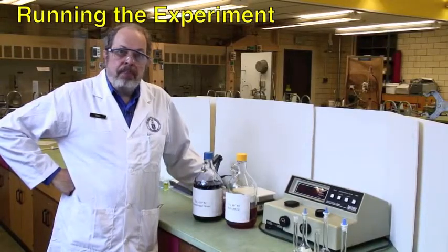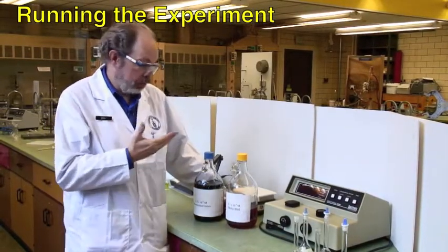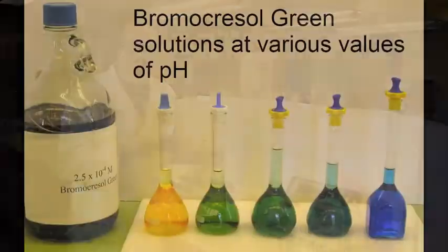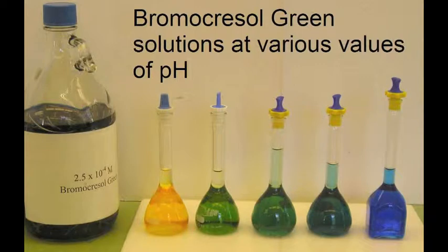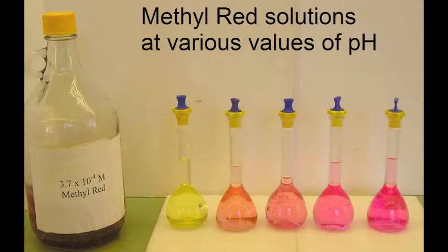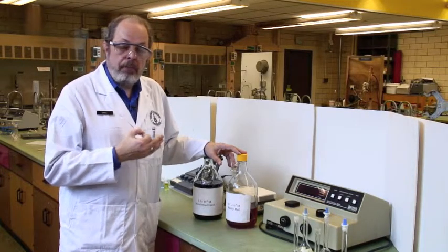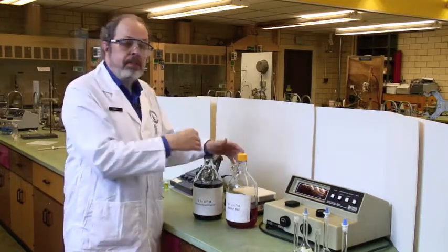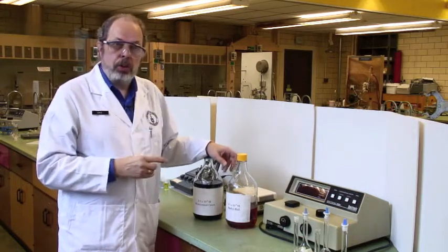You will be making up five solutions of whichever indicator is yours. Let's say you're doing bromocresol green. You will make them up at five different pHs. You'll get a blue solution, a yellow solution, and three different shades of green. For methyl red, you'll get a yellow solution, a pink solution, and three different shades of orange. You will need to run a spectrum of the blue and the yellow, or in this case of the yellow and the pink, as we showed on the board.